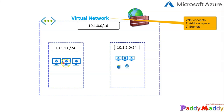Resources within one subnet might have addresses like 10.1.1.11, 10.1.1.12, or 10.1.1.200, while virtual machines in another subnet might have 10.1.2.15, 10.1.2.20, or 10.1.2.30. You can define your addresses accordingly. So technically, we've covered the address space, the subnets, and the different resources within the VNet.